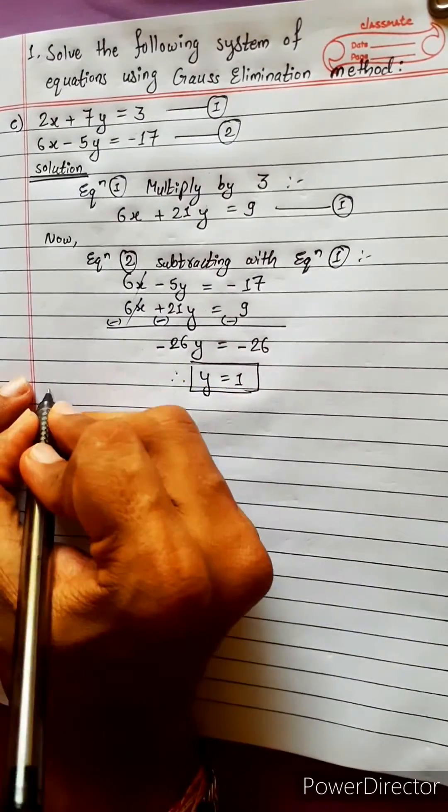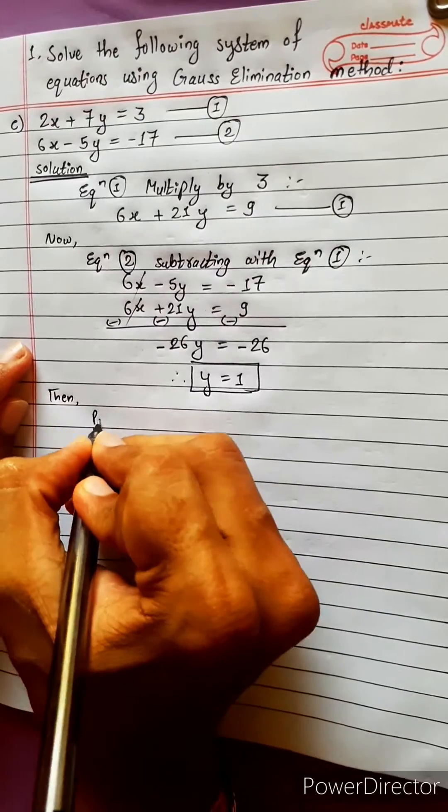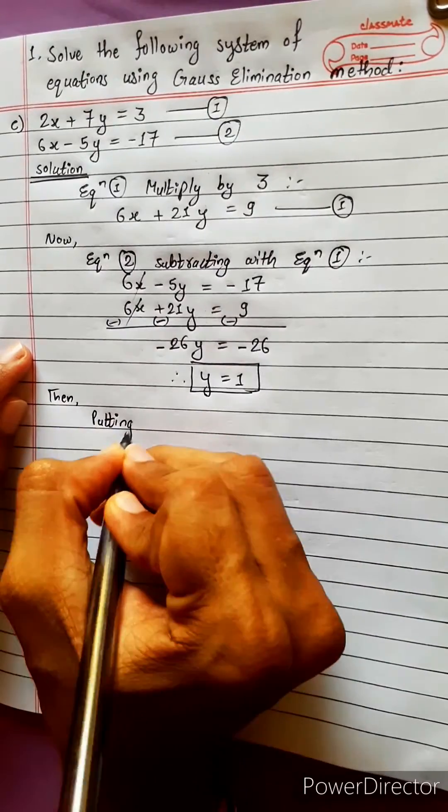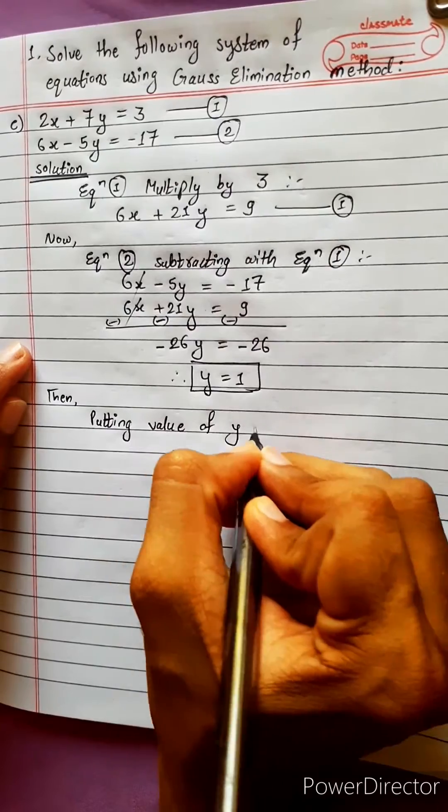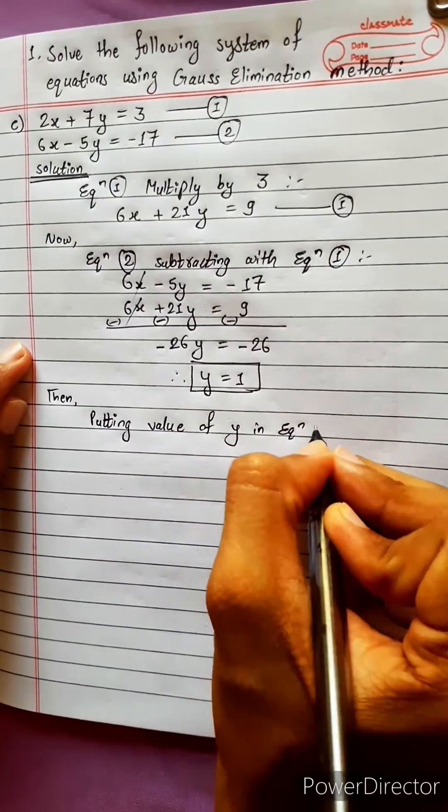Therefore y equals plus 1. Y value 1. Then putting value of y in equation 1. We have 2, putting value of y in equation. Now we have 2.